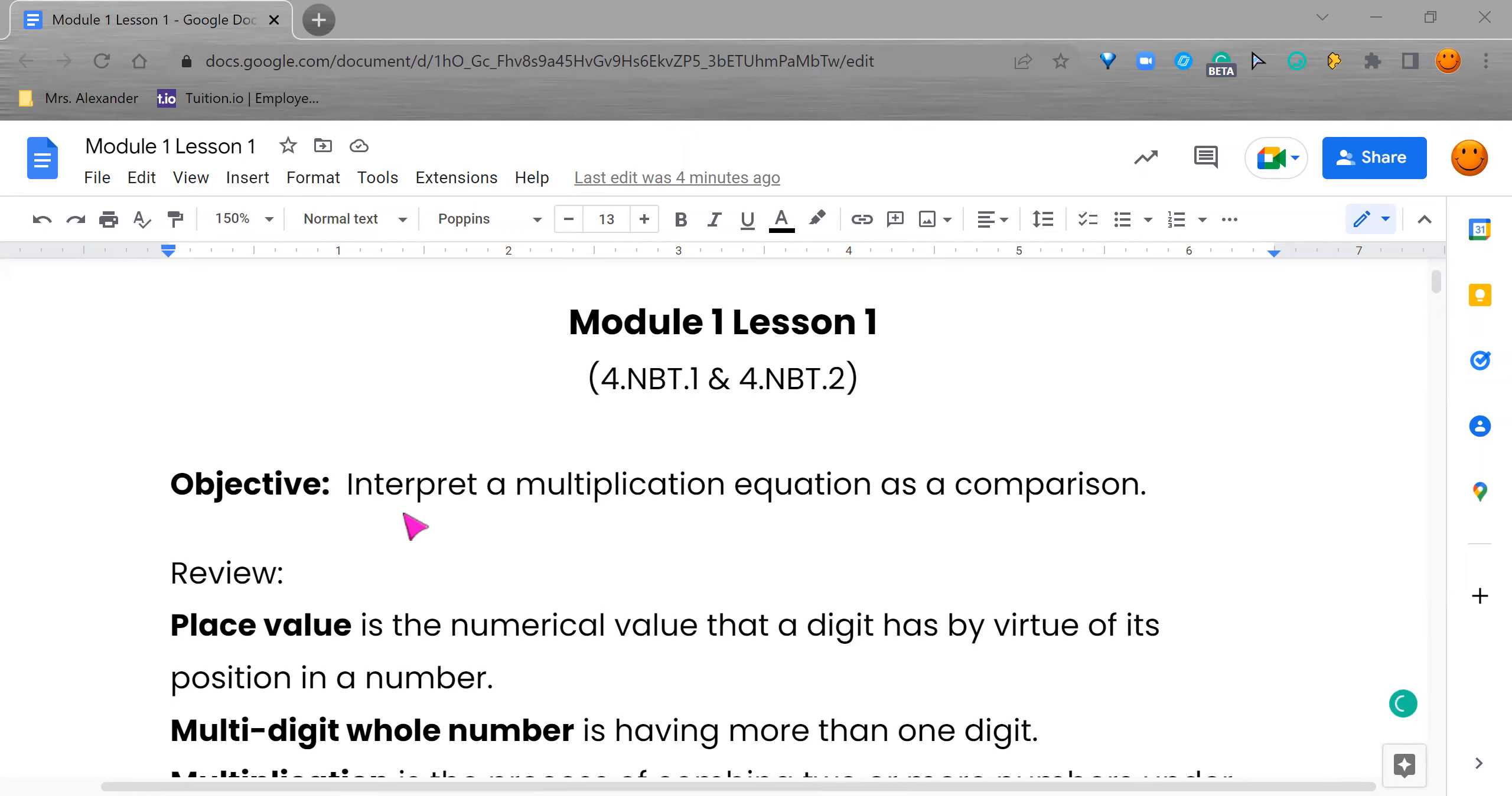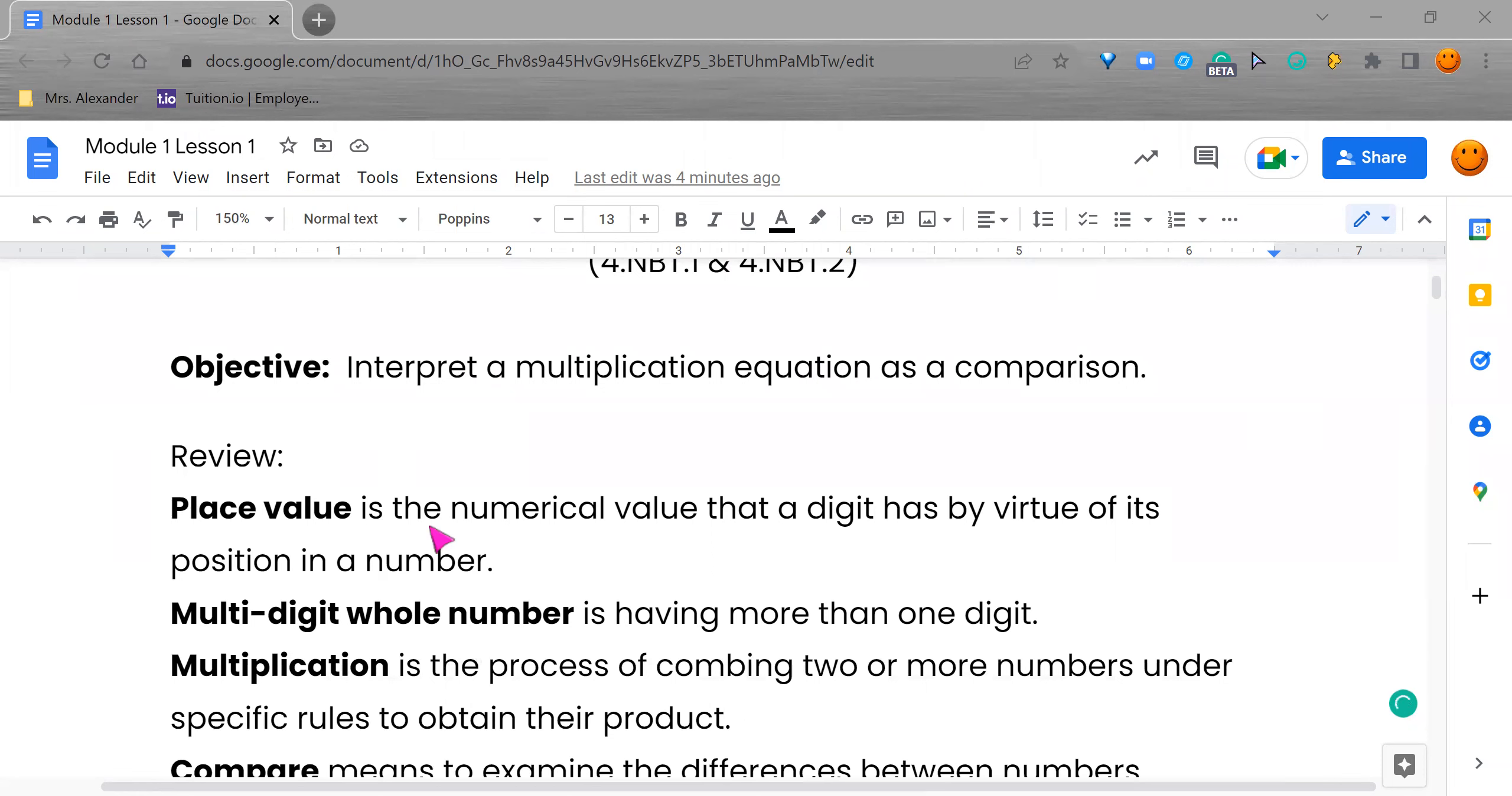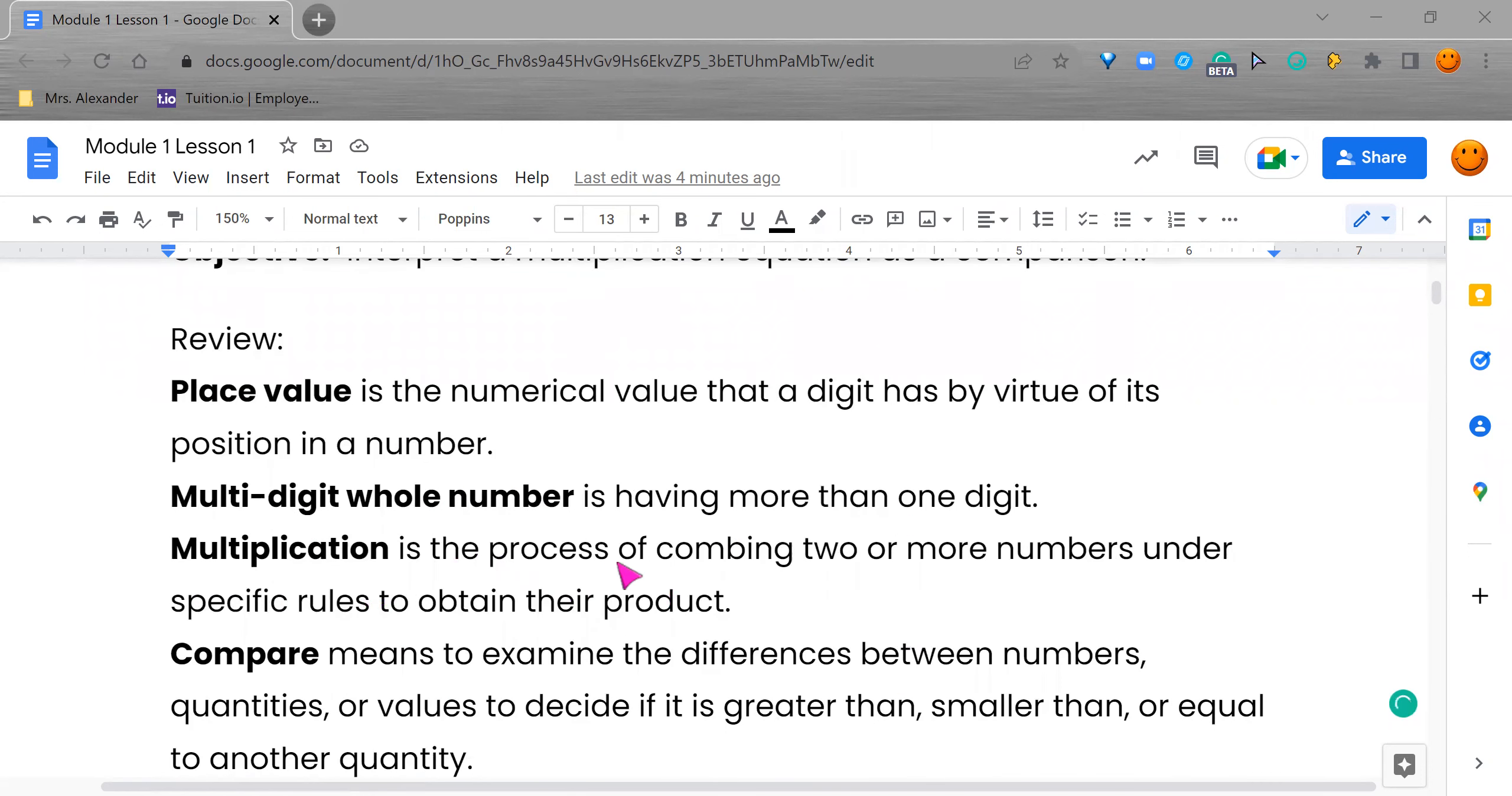Our objective is to interpret a multiplication equation as a comparison. We're looking at only a few vocabulary words for today. Place value is a numerical value that a digit has by virtue of its position in a number. We also need to know what a multi-digit whole number is, which is having more than one digit. And then multiplication is a process of combining two or more numbers under specific rules to obtain their product. And product means their answer.